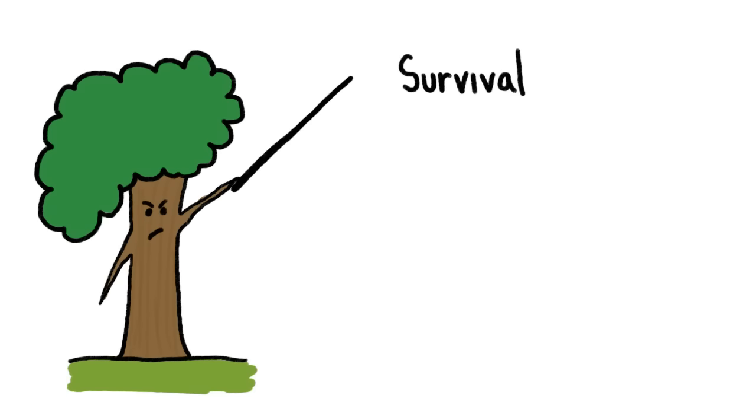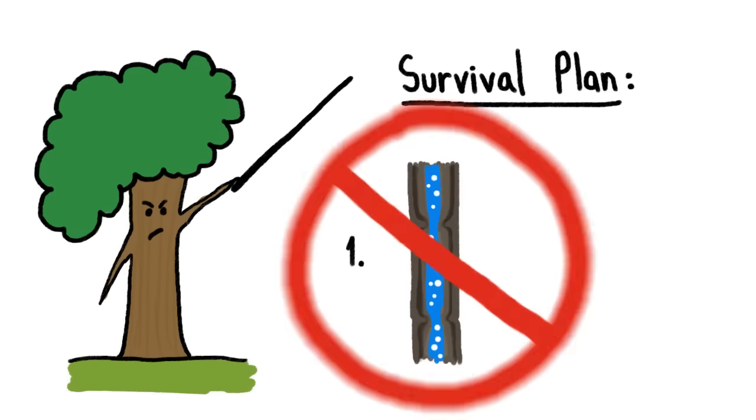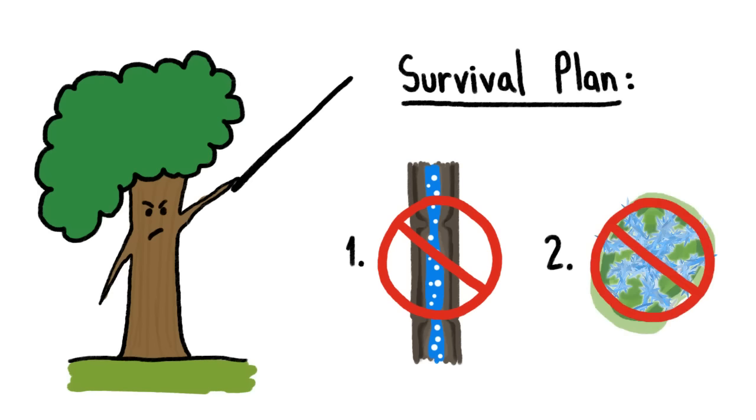So to survive in cold weather, trees need to avoid two things: bubbles in their pipes, and direct damage to living cells due to ice crystals.